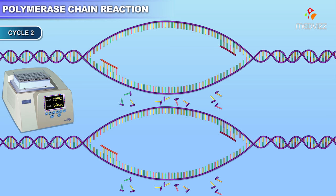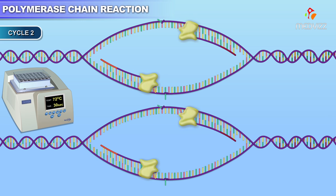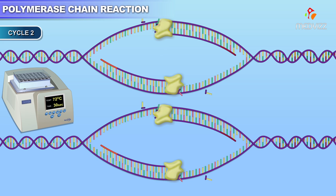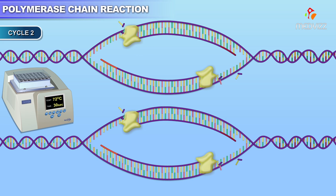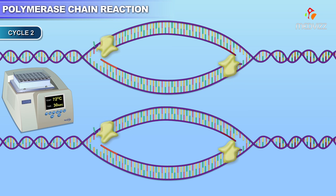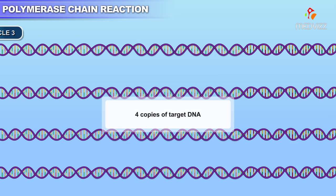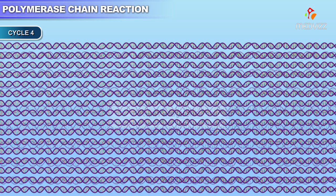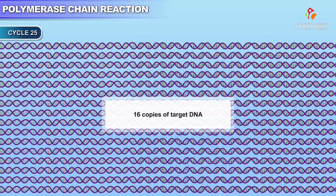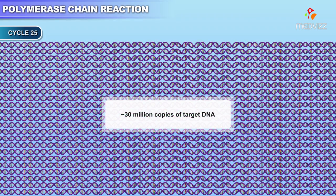After two cycles, four double-stranded target DNA sequences exist. After the third cycle, eight copies exist. After the fourth cycle, 16 copies exist. After 25 cycles, about 30 million copies of the target DNA exist.